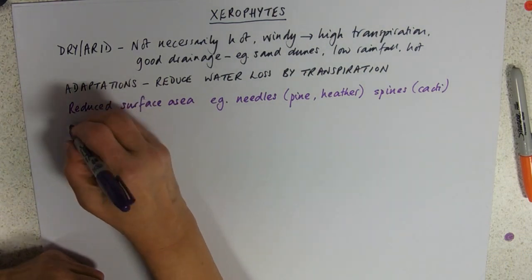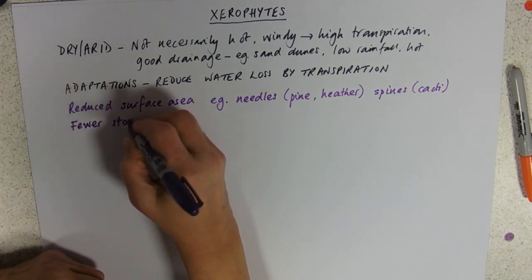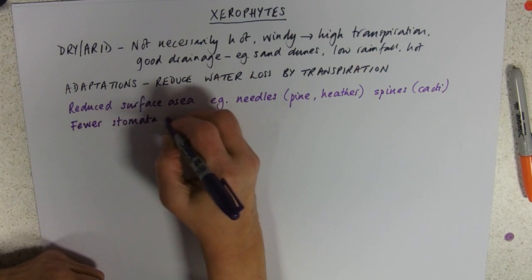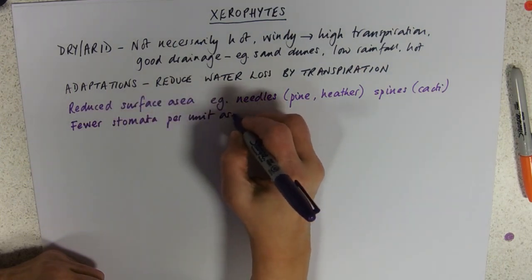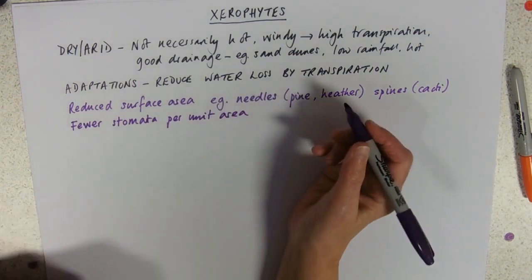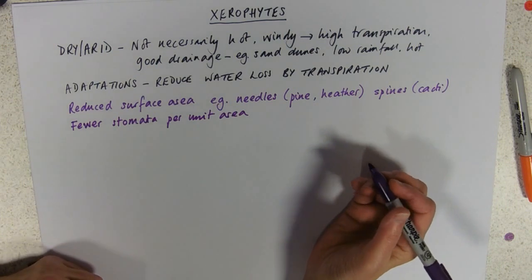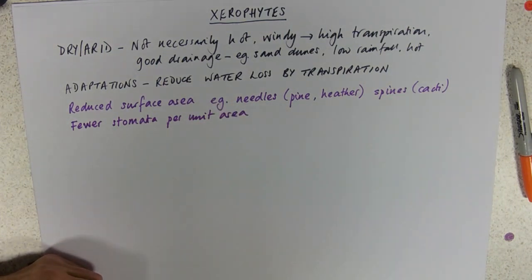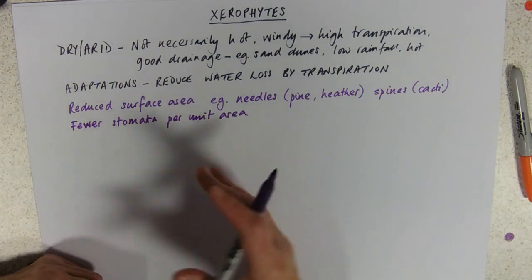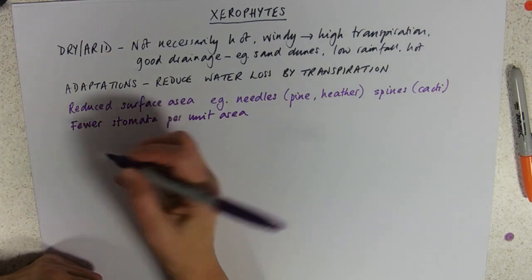As an adaptation, any plant could have fewer stomata per unit area. Obviously the fewer stomata you have, the less you have to lose water through, so that would be a very good adaptation. Those plants would survive better and pass on their alleles for fewer stomata.